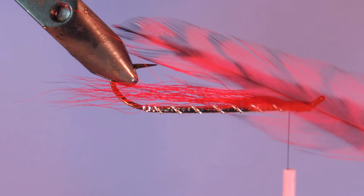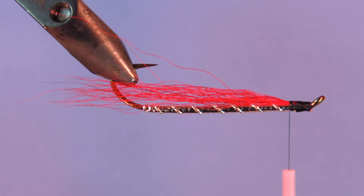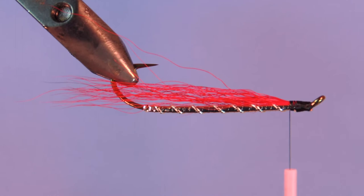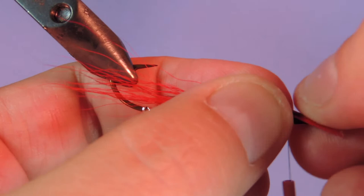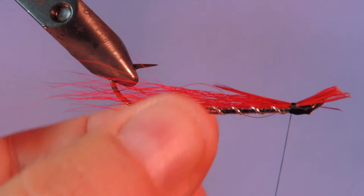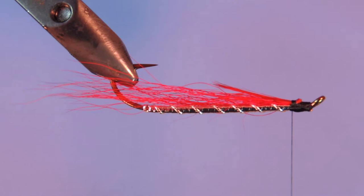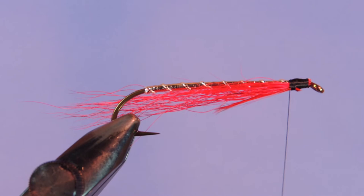Next we're going to take a few fibers from a red grizzly hackle. We're just going to tear those off and tie them in as a throat for the fly. We're going to flip that back up.